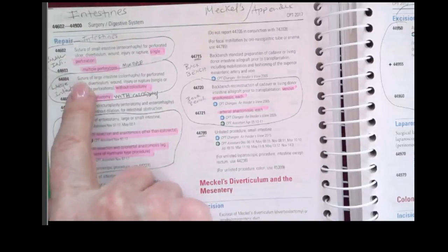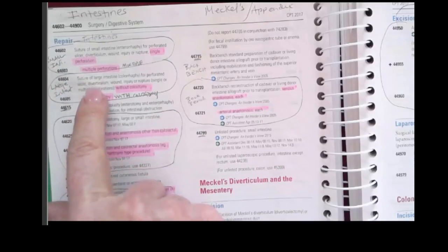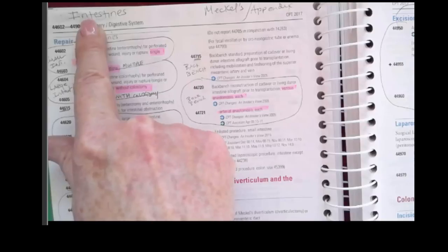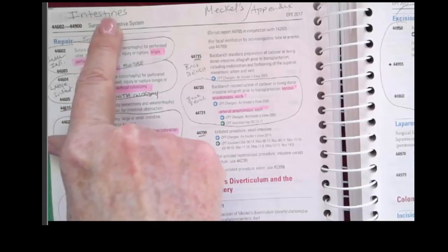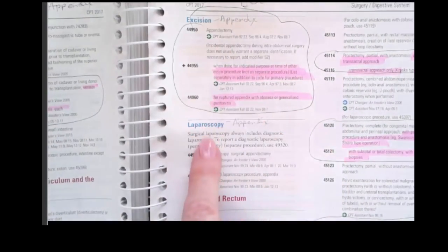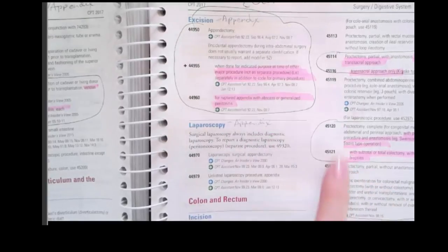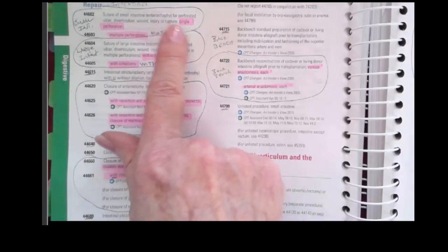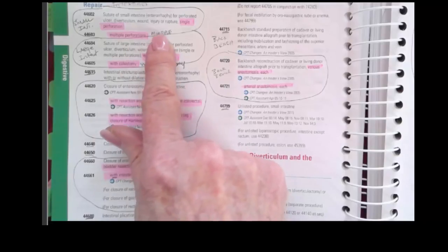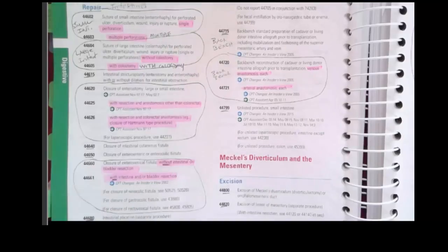For example, these two codes — the big difference is one is a small intestine and the other is a large intestine, but if you read quickly you might miss that. I have the body system organized by columns: the intestines in one column, then Meckel's Diverticulum, the appendix, and the colon and rectum on the next page. You can see where I've continued with my approach of circling a family of codes and then highlighting whatever is different between them — for instance, marking single versus multiple to avoid that easy mistake.